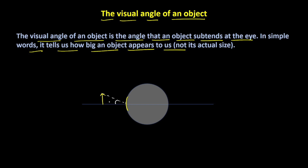Let's say if I call this angle as alpha. So, if somehow I can increase this alpha angle, the apparent height of the object that would appear to us will also sort of increase. So, more the visual angle, the bigger the object would appear to us.